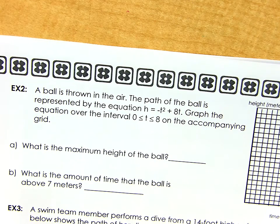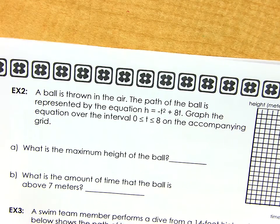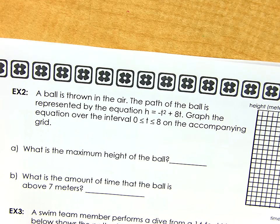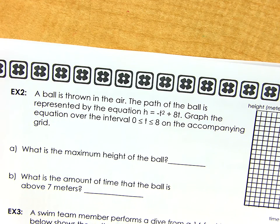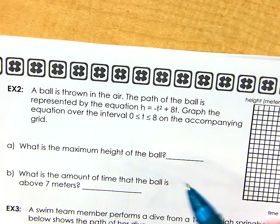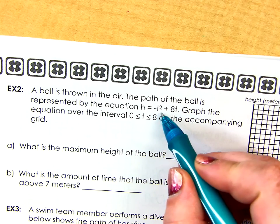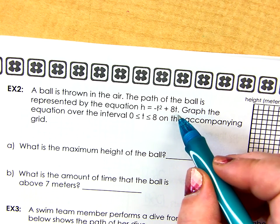A ball is thrown in the air. The path of the ball is represented by the equation. There it is. Graph the equation over the interval 0 to 8 on the accompanying grid. Alright. So if a ball is thrown in the air, it's going to follow the shape of a parabola, right? When we graph parabolas, where do we start? We usually find the vertex, don't we? That's what I would do. When you go to graph these things, we're going to start at the vertex. Guys, they gave you the equation right here. H equals negative T squared plus 8T.